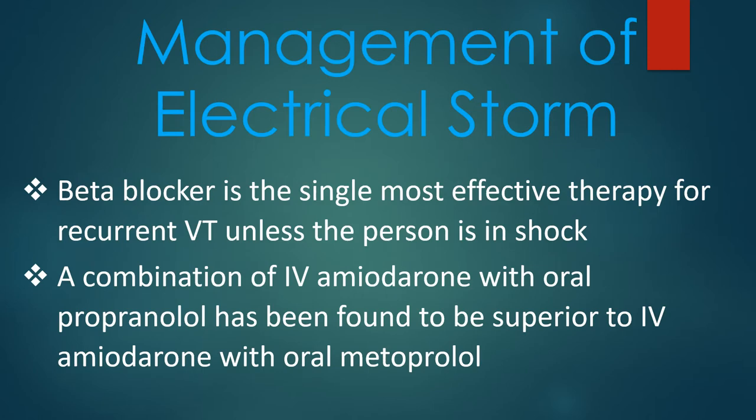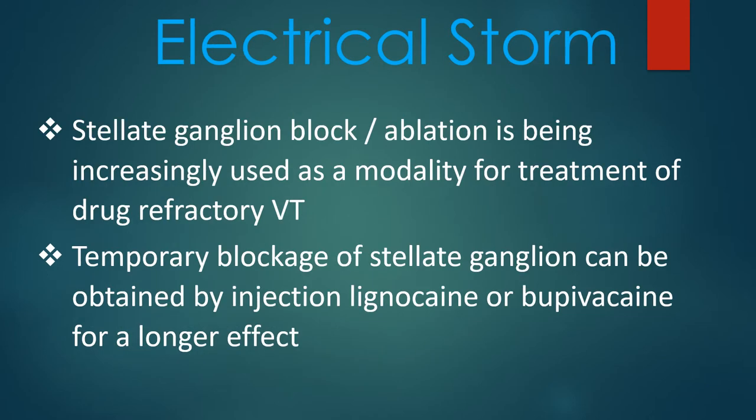Beta blocker is the single most effective therapy for recurrent VT unless the person is in shock. A combination of intravenous amiodarone with oral propranolol has been found to be superior to intravenous amiodarone with oral metoprolol. Stellate ganglion block or ablation is being increasingly used as a modality for treatment of drug-refractory ventricular tachycardia.